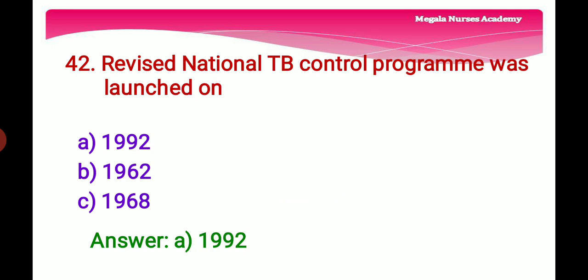Forty-second question: The Revised National TB Control Program was launched on — Option A: 1992, Option B: 1962, Option C: 1968. The right answer is Option A, 1992, because RNTCP was launched in 1992 to deal with shortcomings of the National TB Program.